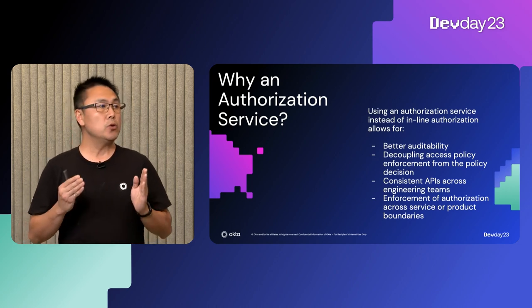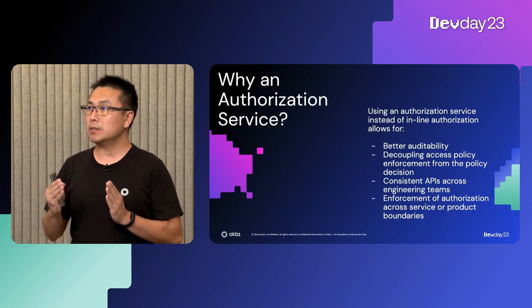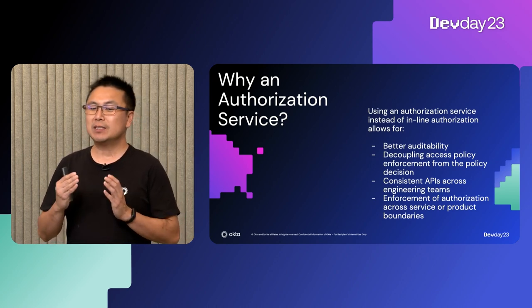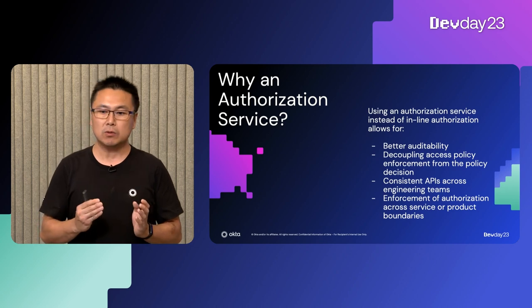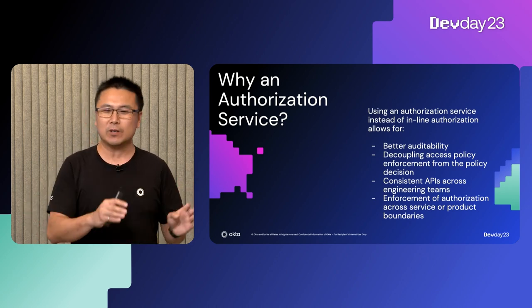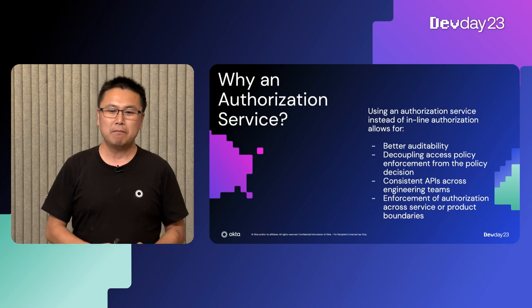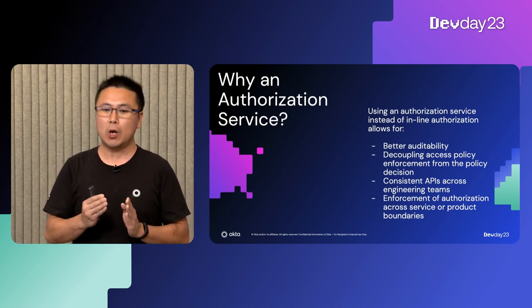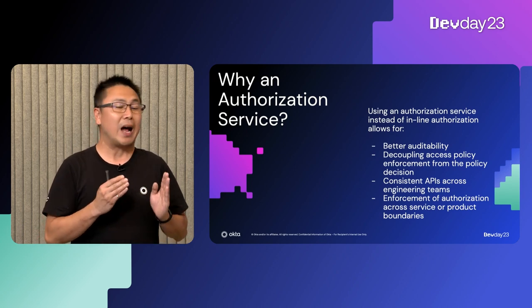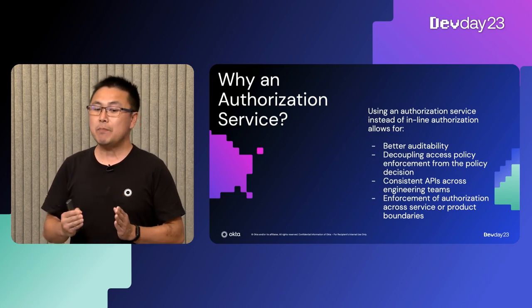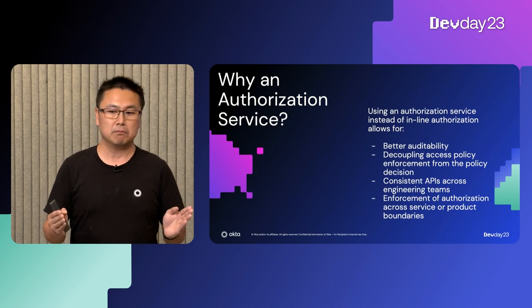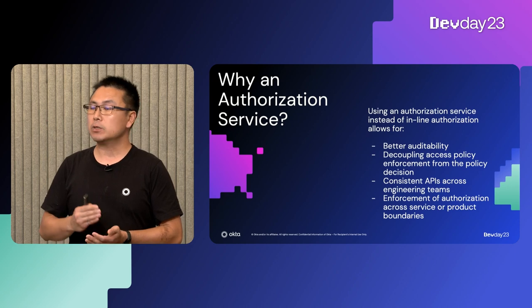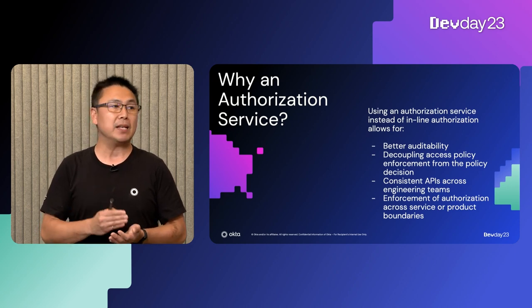Next, you can decouple access policy enforcement from your policy decision. Instead of having separate teams working in silos writing authorization checks all over the code, you will have one place to centralize all your knowledge. Third, it will allow you to have consistent APIs across engineering teams — you can implement, establish, and enforce company-wide best practices.